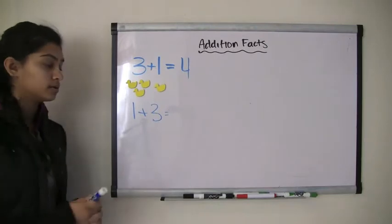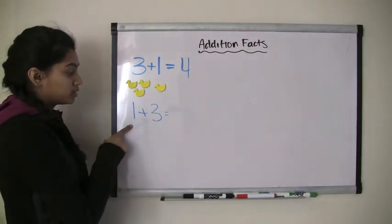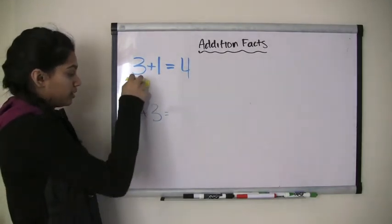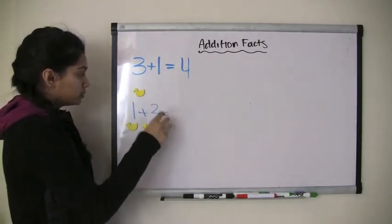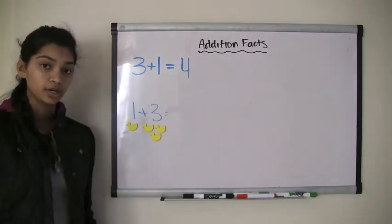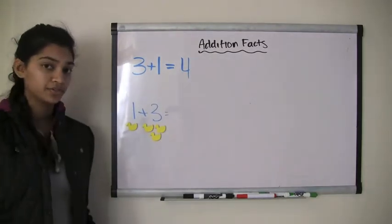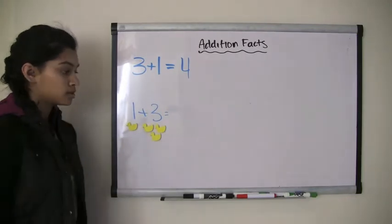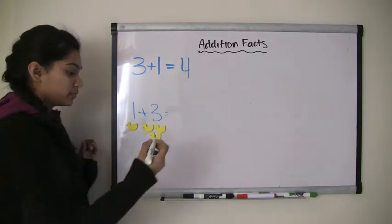Well, let's find out. So I start with one duck here. I'm going to move this one duck down. And I want to add 3 more. So I have 1, 2, 3 more. So now how many ducks do I have in total? I have 1, 2, 3, 4 ducks. So 1 plus 3 also equals 4.